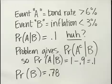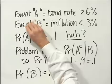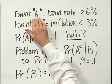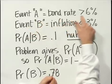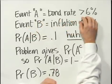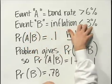Now that I've recognized the problem and written down the formula, I need to assign variables. Event A is the thing I'm interested in finding the joint probability of with event B, but it's also the event that I don't know the unconditional probability of — I only know the conditional probability of that with event B. So event A is that the bond rate is greater than 6%, and event B is the event that inflation is below 3%.